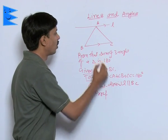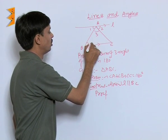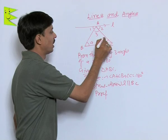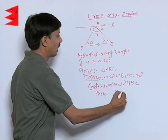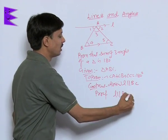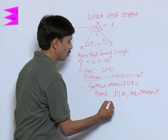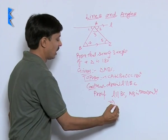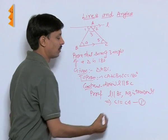If we talk about proof I am mentioning this angle 1, this is angle 2, this is 3, this angle is 4 and this angle is 5. Here L is parallel to BC and AB is transversal. So, what implies this? Angle 1 is equals to angle 4 relation number 1.